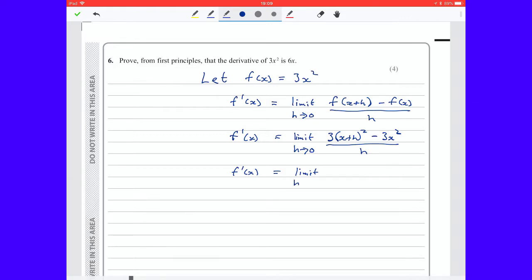And we keep writing limit h tends to 0 right up until the last line. Now we have to expand (x+h) squared. If this was a higher power that we were differentiating, you would use Pascal's triangle from the binomial expansion to help you do this. But with it just being squared, it's nice and straightforward.